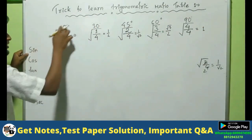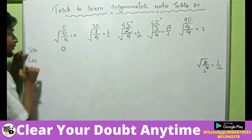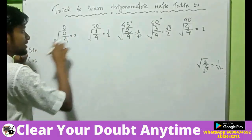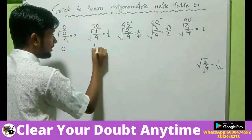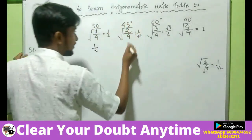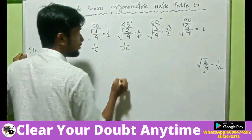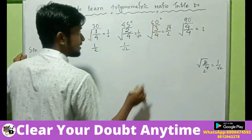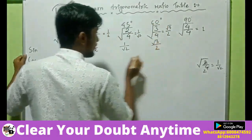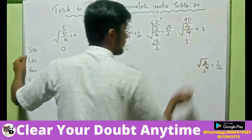So what is sine 0 degree? It will be 0. What is sine 30 degree? It will be 1 by 2. What is sine 45 degree? It will be 1 by root 2. What is sine 60 degree? It will be root 3 by 2. What is sine 90 degree? It will be 1.